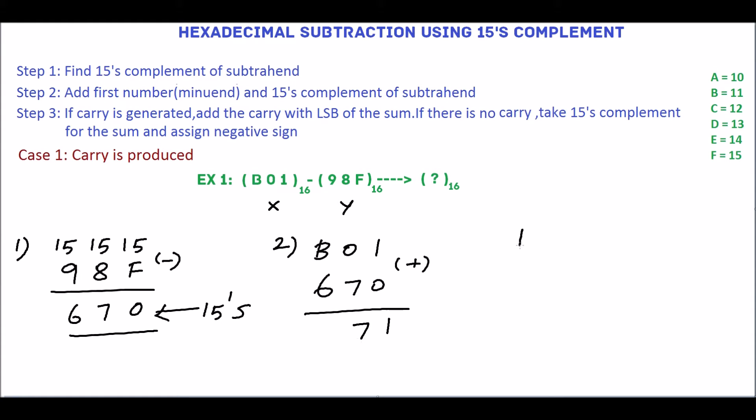17 is not a hexadecimal number, so we will convert this. 17 by 16, the quotient is 1 and the remainder is 1. So the equivalent hexadecimal number is 11.